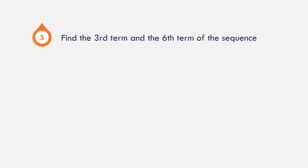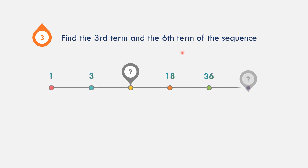In example number 3, let us find the third term and the sixth term of the sequence: 1, 3, unknown, 18, 36, unknown. Let us identify the pattern to get the third and sixth terms.